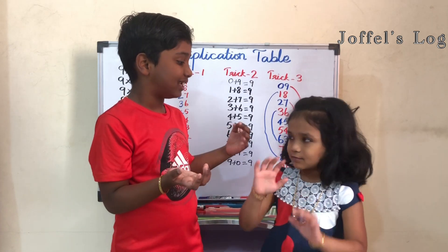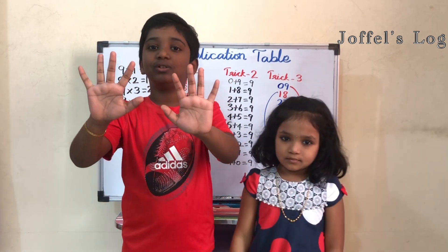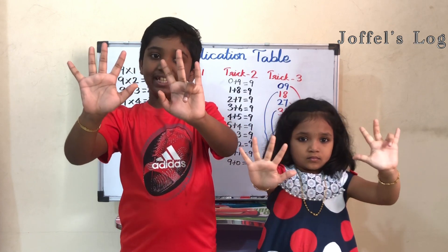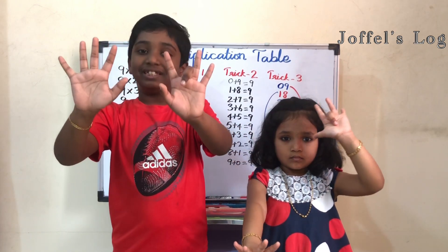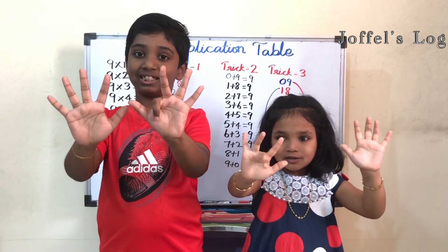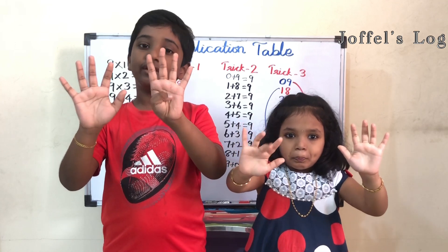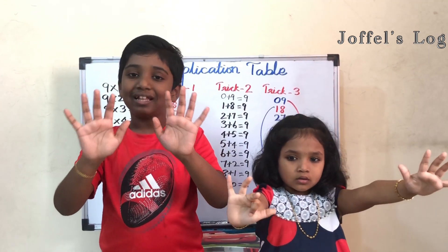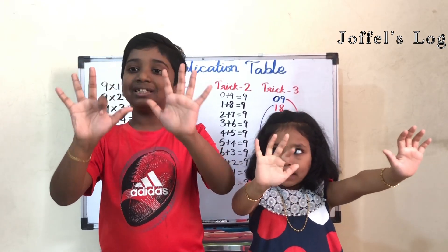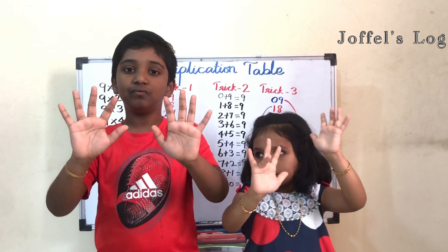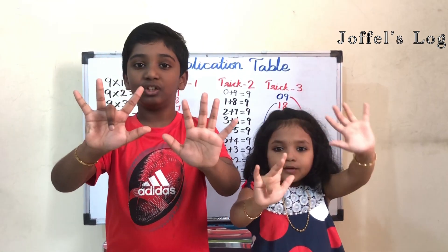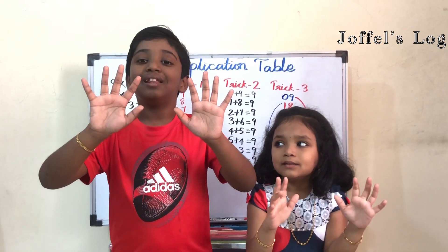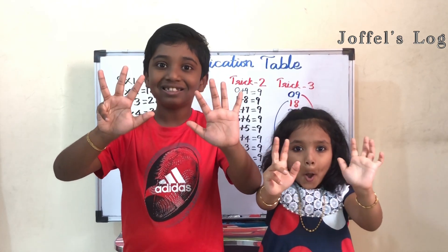Let's do the nine times multiplication table with our fingers. Let's say it together: nine times one equals nine; nine times two equals eighteen; nine times three equals twenty-seven; nine times four equals thirty-six; nine times five equals forty-five; nine times six equals fifty-four; nine times seven equals sixty-three; nine times eight equals seventy-two; nine times nine equals eighty-one; and nine times ten equals ninety.